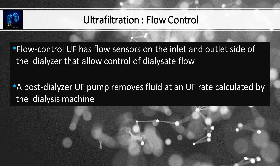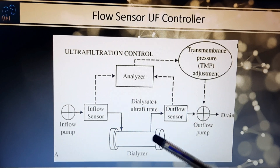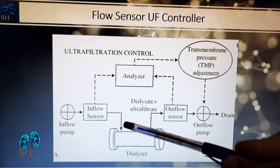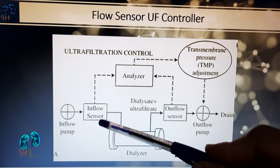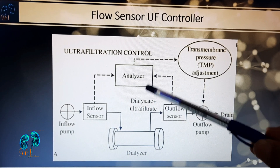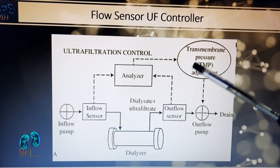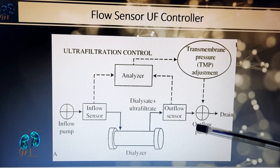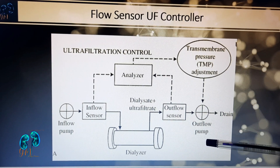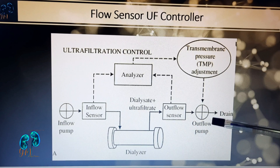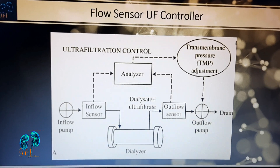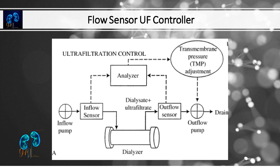Flow control of ultrafiltration uses flow sensors on the inlet and outlet side of the dialyzer to allow control of dialysate flow. A post-dialyzer UF pump removes fluid at the UF rate calculated by the dialysis machine. The dialyzer has an inflow sensor and an outflow sensor, and transmembrane pressure is analyzed between the dialyzer membrane and blood. The outflow sensor measures the combined total of dialysate and ultrafiltration, controlled by the ultrafiltration pump.